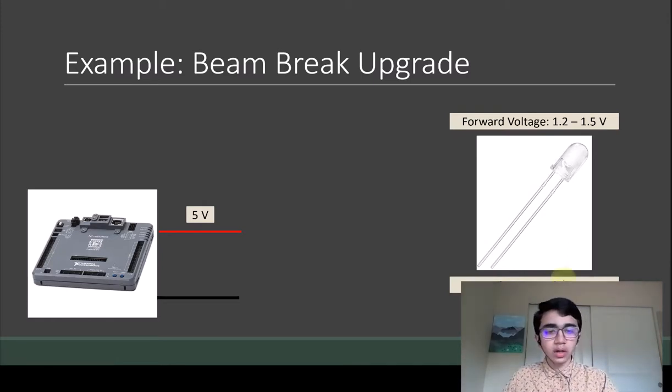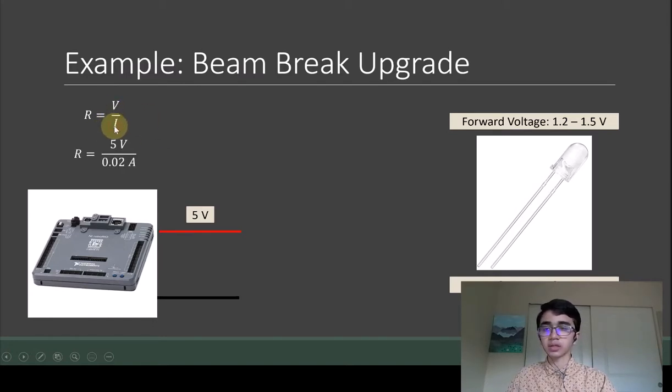The way we're going to calculate the resistor we need to put in between our 5 volt power line and the LED is by using Ohm's Law. Remember Ohm's Law is R equals V over I. If you plug in the values we know - we know we want our voltage to be 5 volts and we want to limit the current to 20 milliamps.